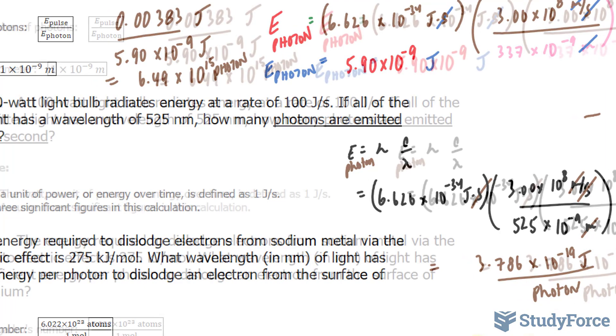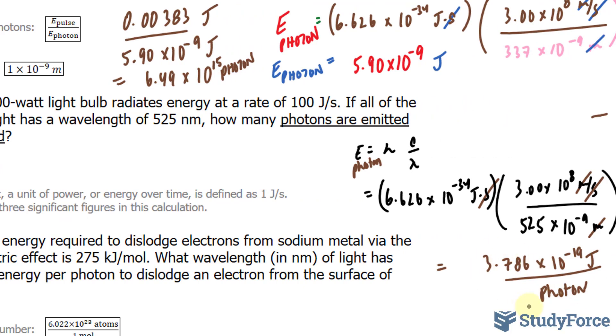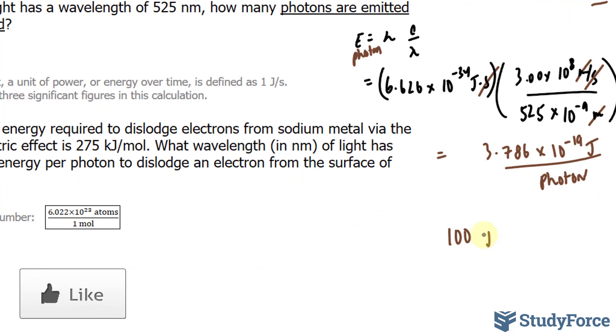Now the question also suggests that we have to assume three significant figures in our calculation. So we'll keep all of these significant figures but for the next calculation we'll have to take that into account. Now we're told the rate is 100 joules per second, and as with any rate we can flip this where we have 1 second per 100 joules. So what I will do is multiply this number with this number.